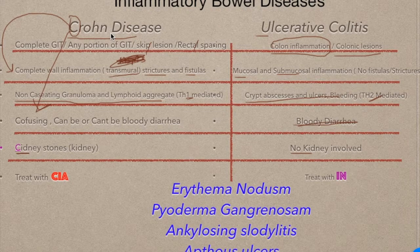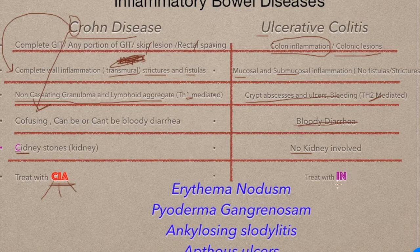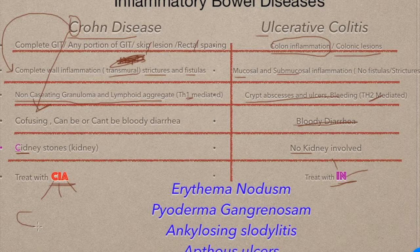Crohn's disease seems like a very bad disease spread all over the GIT, so we need to contact the CIA to treat it: Corticosteroids, Immunosuppressants, and Antibiotics. For ulcerative colitis, we don't need CIA — we can just go in and cure it with immunosuppressants and non-steroidal anti-inflammatory drugs.